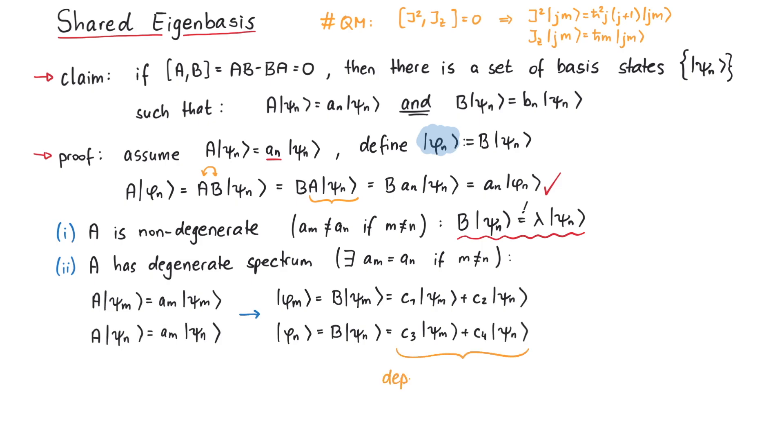Depending on the numerical values of c_1, 2, 3 and 4, we can write a linear combination psi_tilde_m and psi_tilde_n, such that when we apply B on these new psi_tilde functions, we get the same functions multiplied by some constant. And this is an eigenvalue equation.